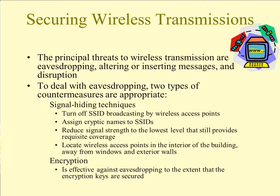How do we secure wireless transmission? The principal threats are eavesdropping, altering or inserting messages, and disruption. There are two types of countermeasures: signal hiding techniques and encryption. For signal hiding, turn off SSID broadcasting by wireless access points — you can do this on your home network so that anyone connecting would need to know the SSID. This is particularly useful for home networks since authorized users can simply ask you for the SSID.